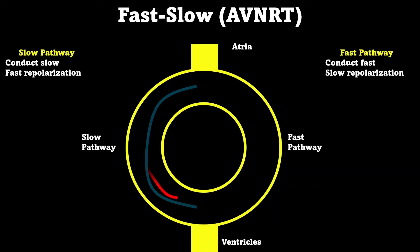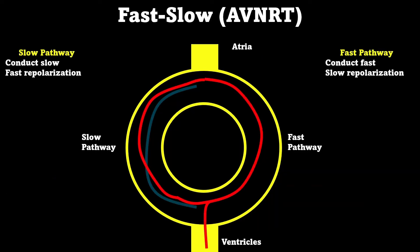For a fast-slow mechanism, there's anterograde conduction down the fast pathway and retrograde conduction up the slow pathway, creating our re-entry circuit.